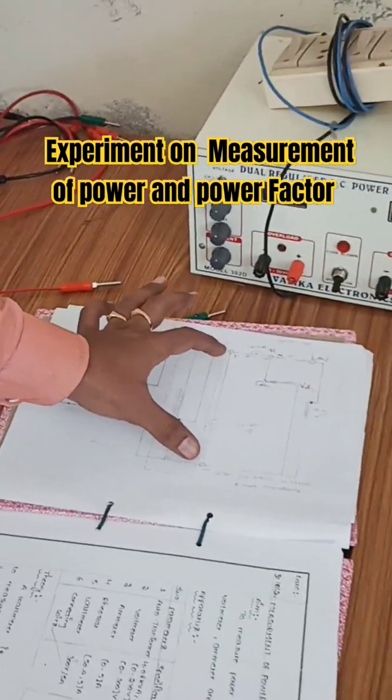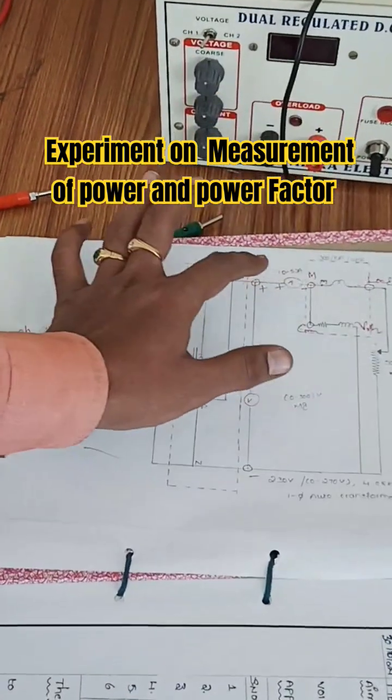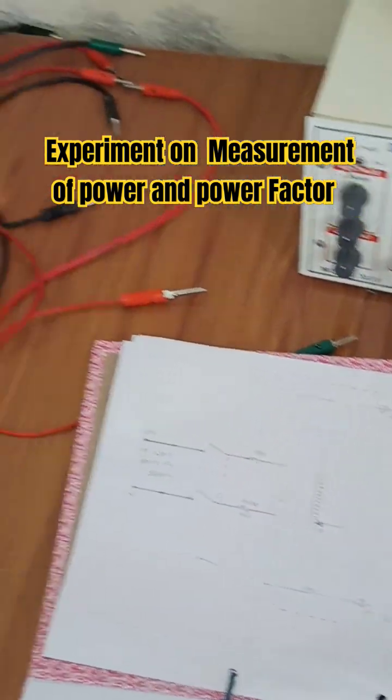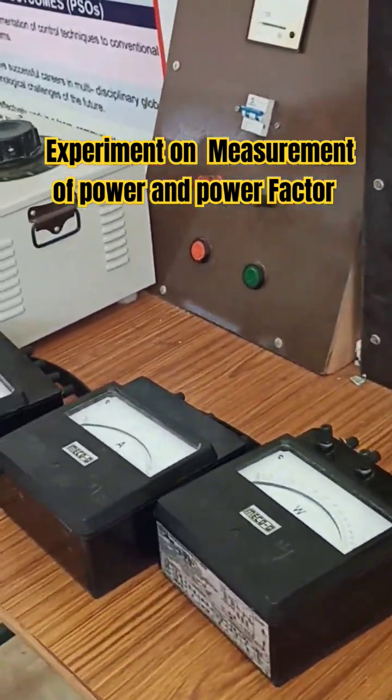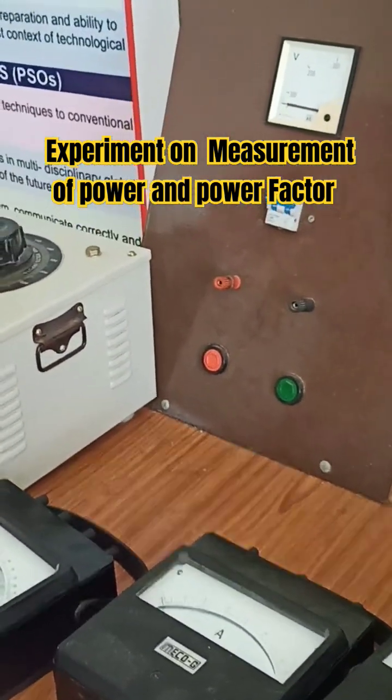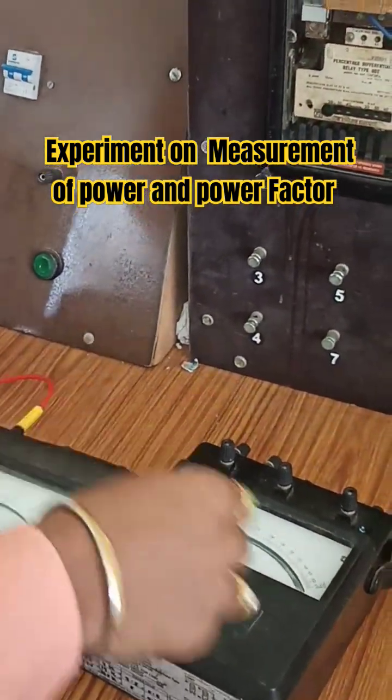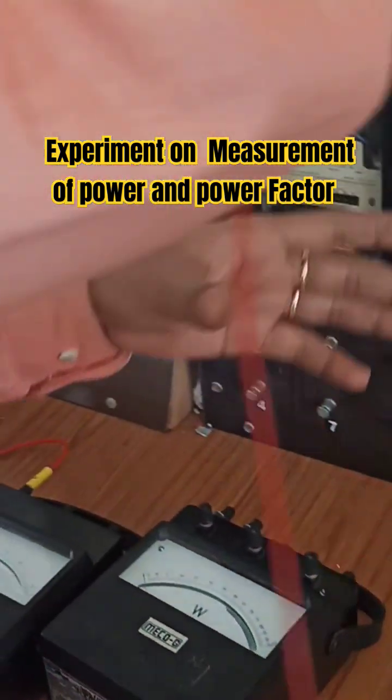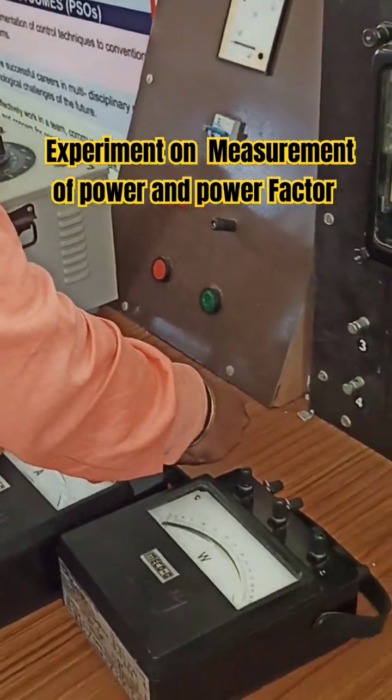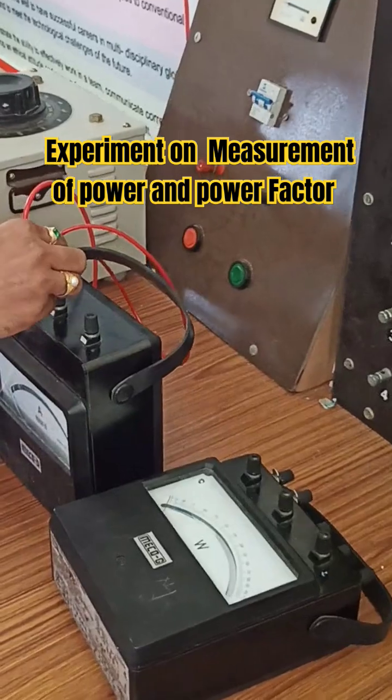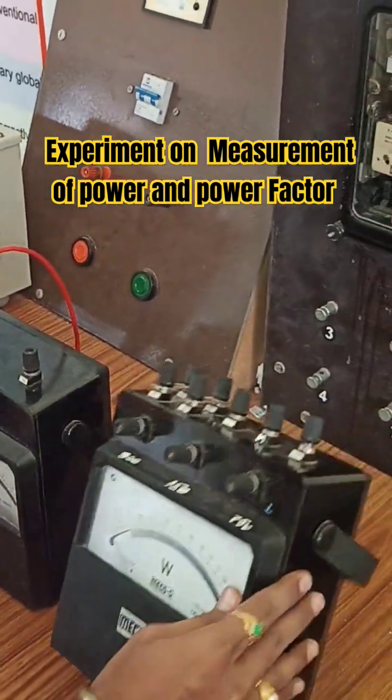First, let's give this loop from supply to ammeter. You can see here, this is our auto transformer. From the supply positive terminal to the ammeter, and ammeter output. This is the ammeter output; ammeter range is 5 amperes. This is the range of the ammeter.